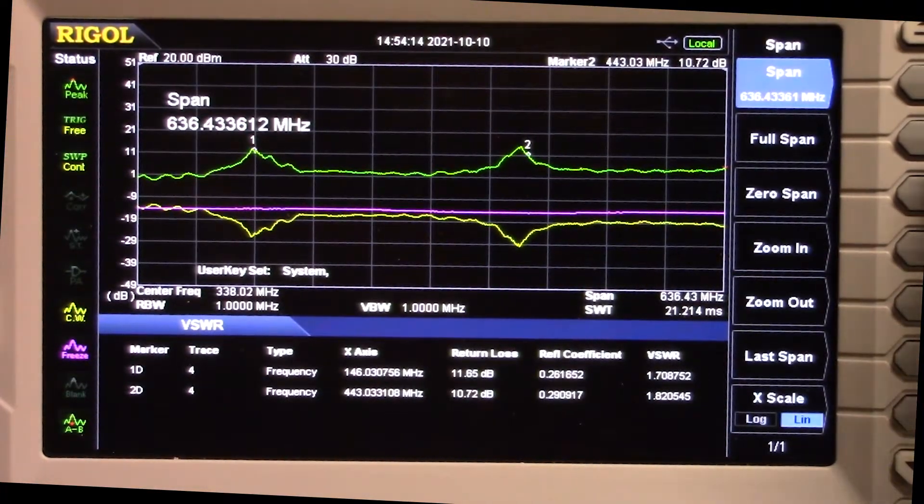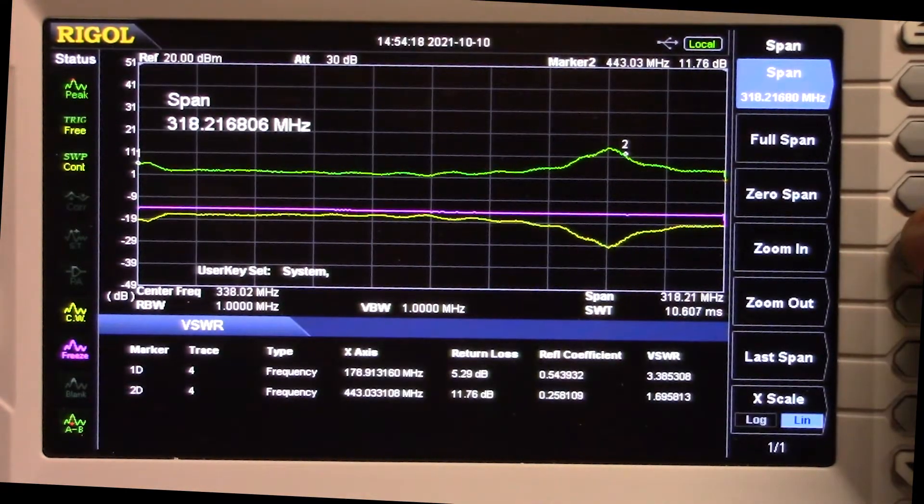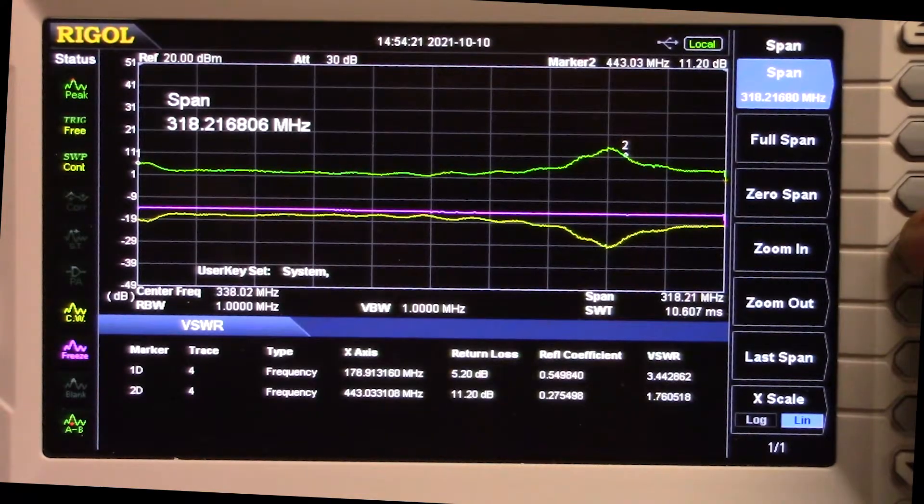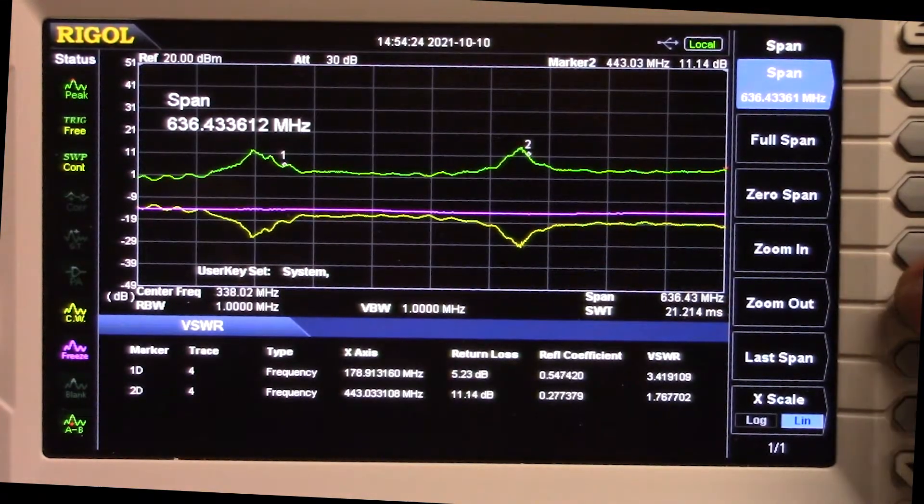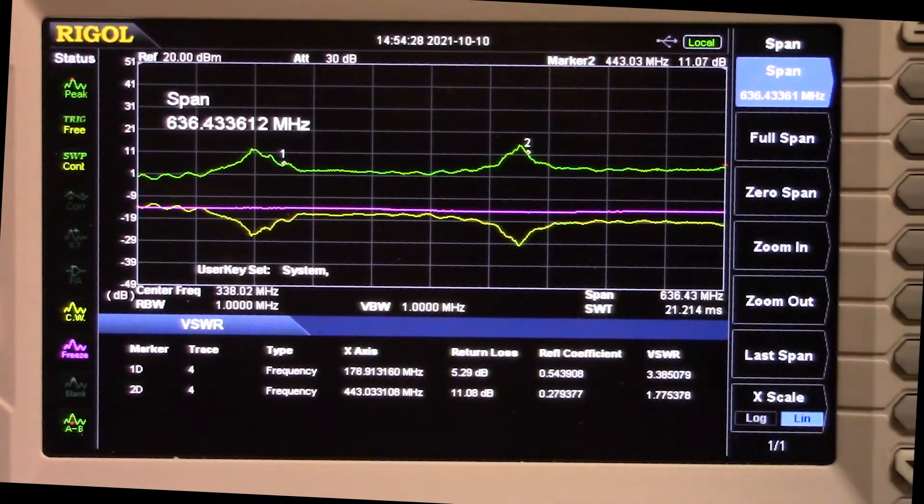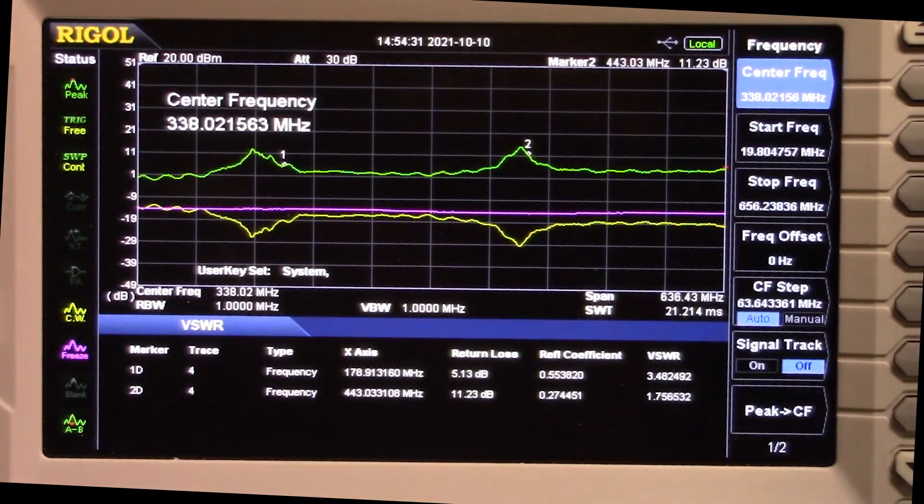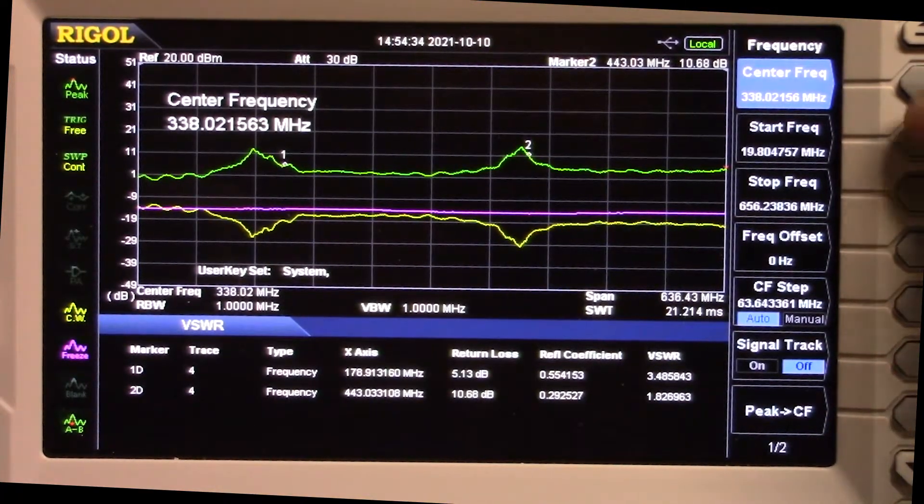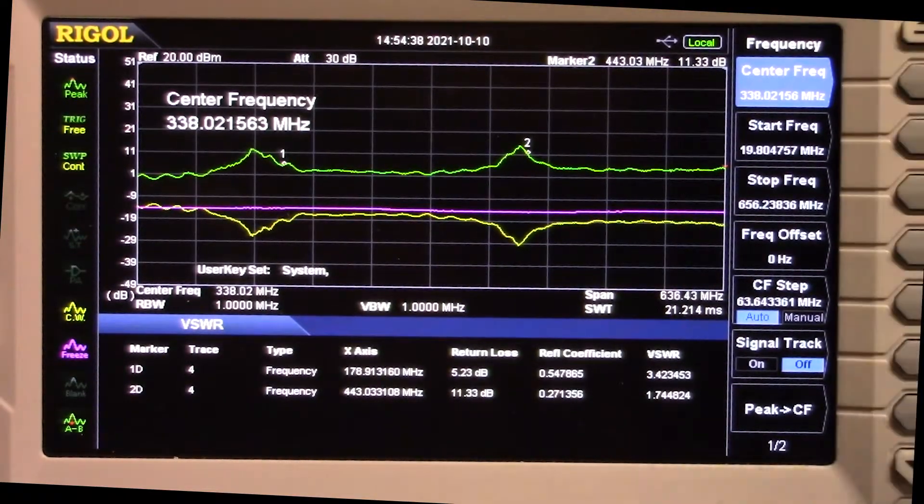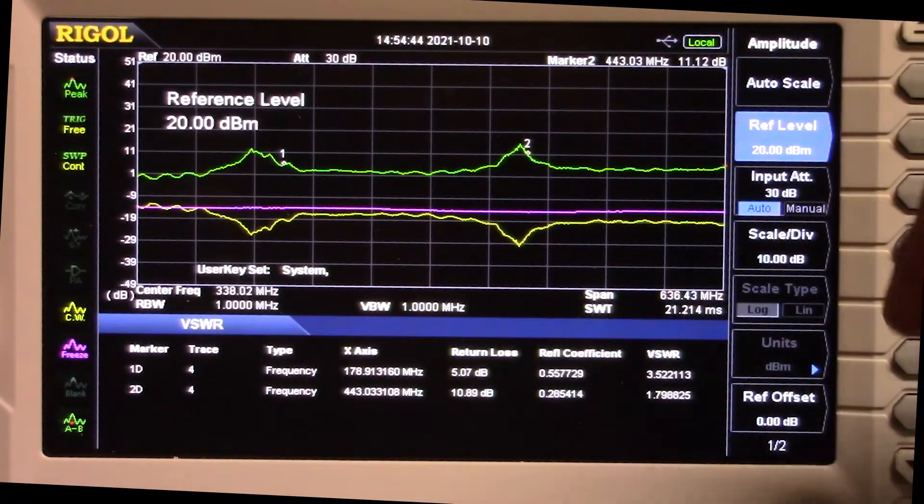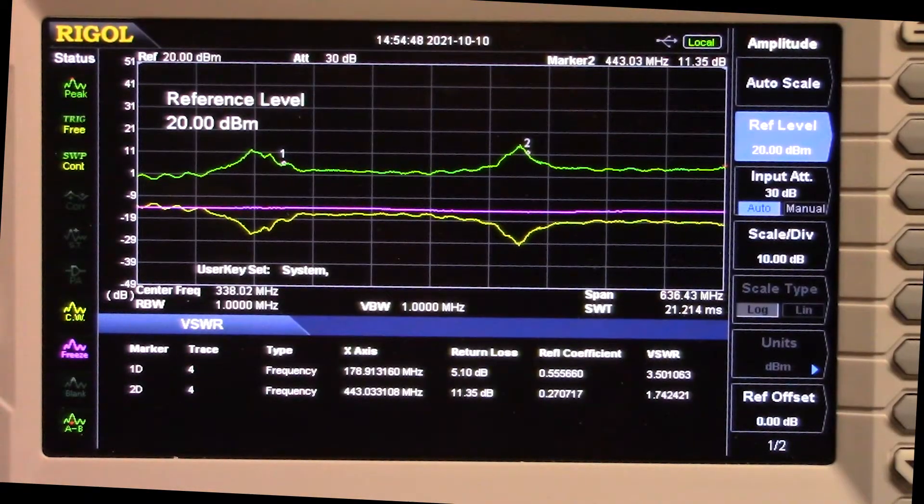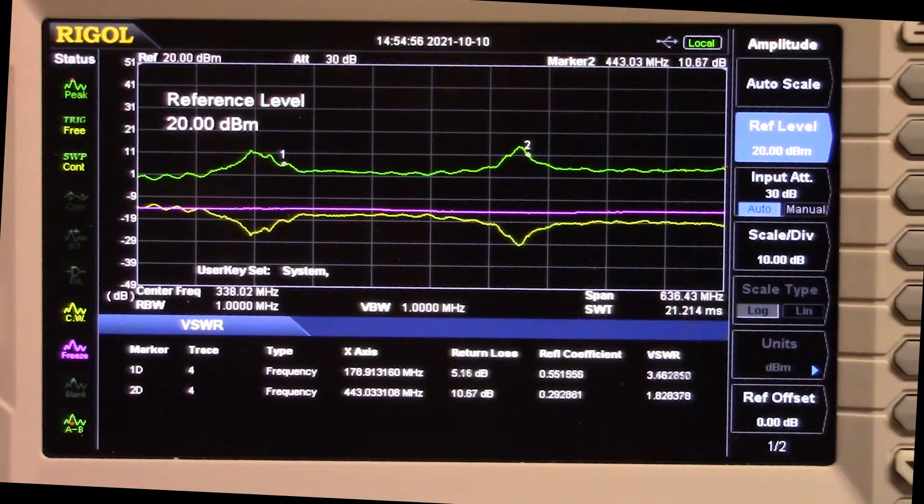There's a few other things we can do to look at our signal. We can zoom in on the span and narrow down our span, get a closer look and zoom back out. We could do the whole range of the spectrum analyzer. We can change our frequency ranges, our start and our stop and our span. We can modify our amplitude levels - I have it set at 20 dBm. We can add more markers. If we were doing an HF antenna looking at two or three different bands, we could put up to four markers, one on each band.